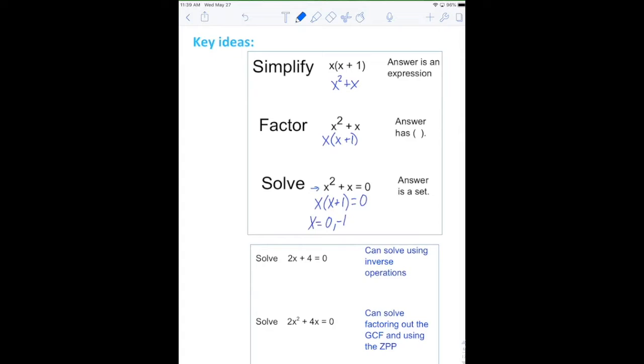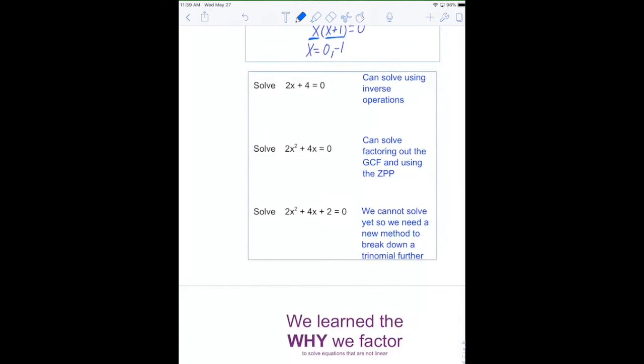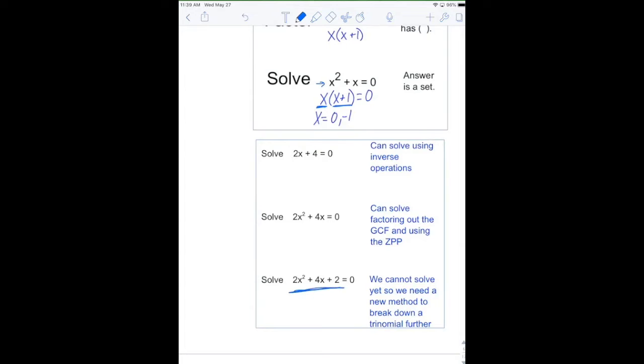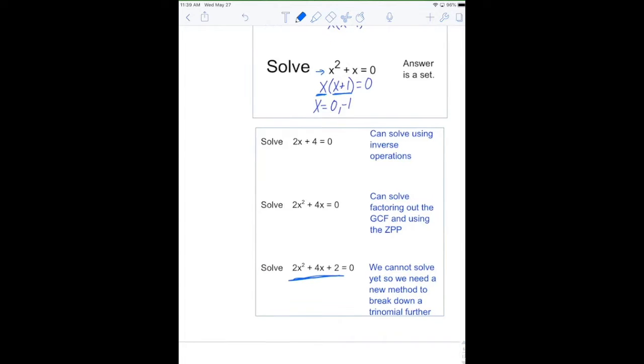So you saw this last week where we could just factor out the x. And then we use what's called a zero product property to set each of these equal to zero. The problem is when we have an x squared and an x and a constant, we now need to be able to factor.